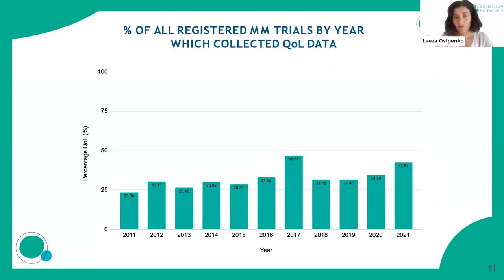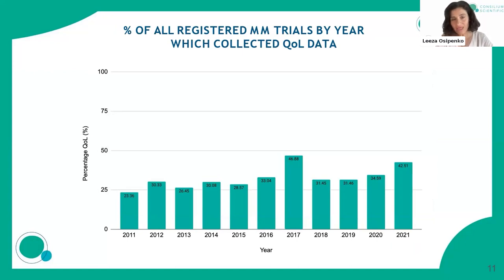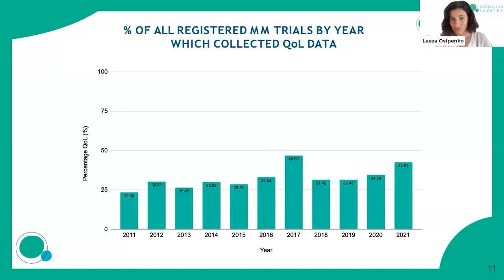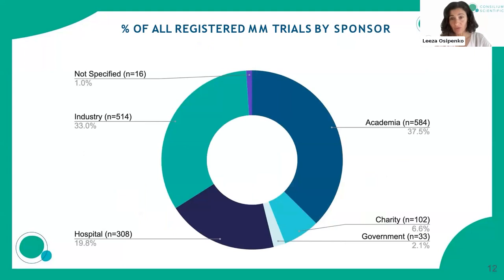Looking at the percentage of trials that collected quality of life data per year over 10 years, I personally expected to see a very strong upward trend — having been at NICE for several years preaching the importance of quality of life data collection to every developer. However, we do not see that trend. On average it's pretty stable: quality of life data collection in myeloma clinical trials is around 36 percent.